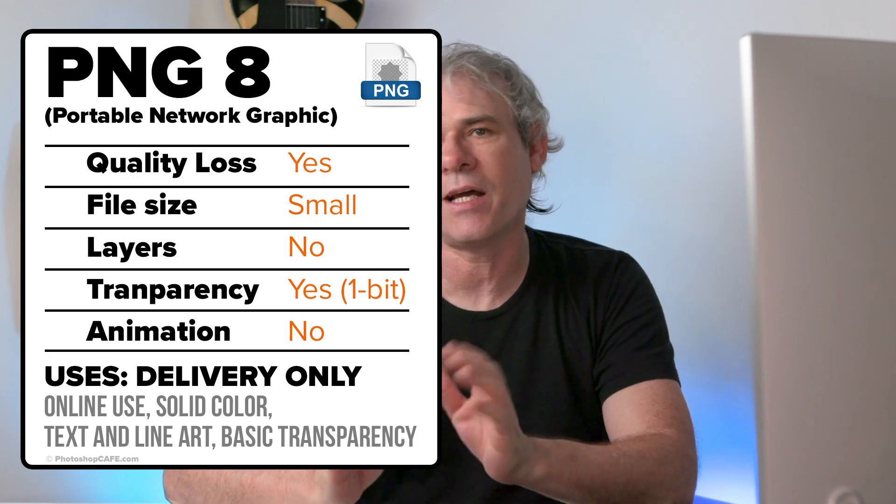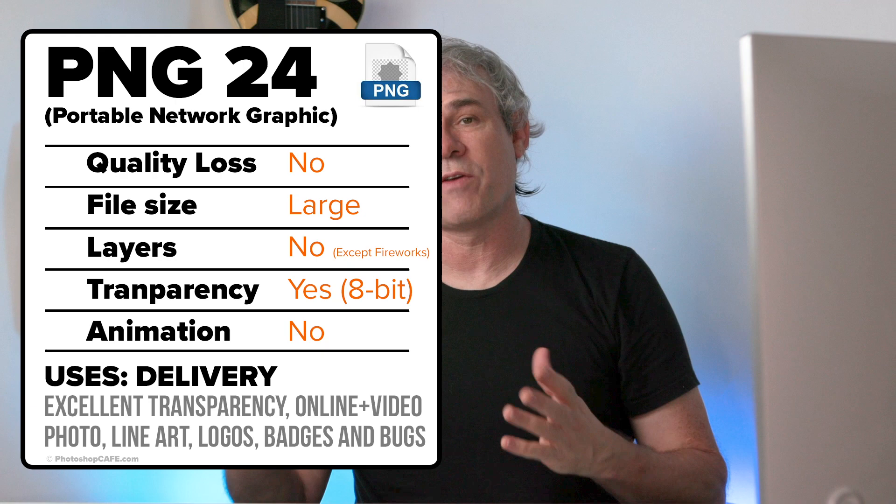The PNG 8 came along as kind of a replacement for GIF in some ways, although it didn't support animation. At that time, web animation GIFs were kind of dead — everything was using Flash and scalable vector formats. The PNG 8 was a way to produce the same kind of result as a GIF but with a smaller file size. Then when PNG 24 came along, it wasn't so much about creating compressed files for the web, but it was very useful because of the multiple levels of transparency. You'll use it a lot for overlays in video and different things like that. Even when you're working in Photoshop, you can bring in those PNGs and get beautiful transparency. So it's used a lot for logos, badges, buttons, banners, bugs — things like that.